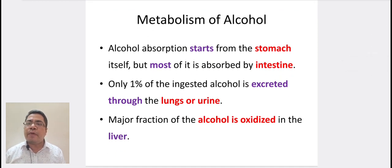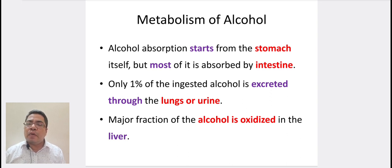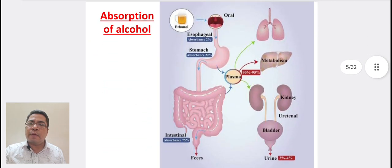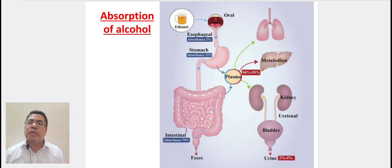Coming to the metabolism of alcohol. Alcohol absorption starts from the stomach itself, but most of it is absorbed by the intestine. Only 1% of the intestinal alcohol is excreted through lungs or urine. The major fraction of the alcohol is oxidized in the liver. In this diagram, we can see that stomach and intestine are the major contributors of the absorption of alcohol.